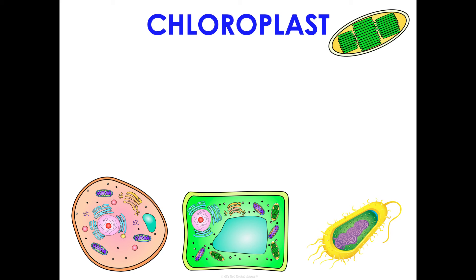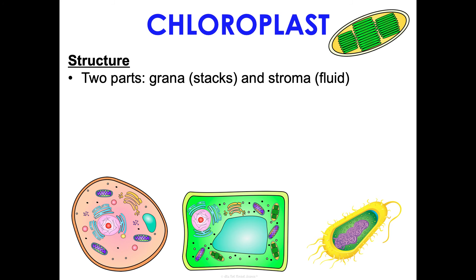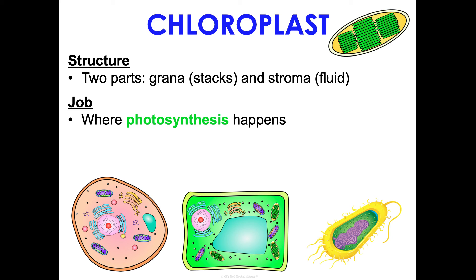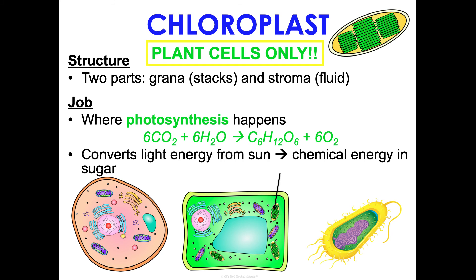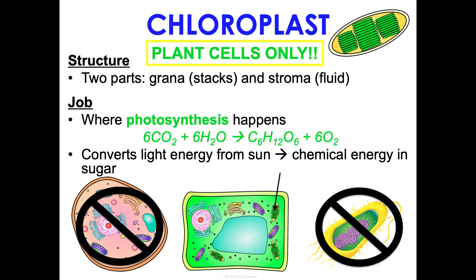Similarly, an important energy structure is the chloroplast. It has two parts: the grana — stacks of thylakoid membrane — and the fluid part known as stroma. This is where photosynthesis happens: six CO2 and six water molecules, with the help of sunlight, make one glucose molecule and six oxygen. It converts light energy from the sun and stores it as chemical energy in the form of sugar. Chloroplasts are plant cells only.